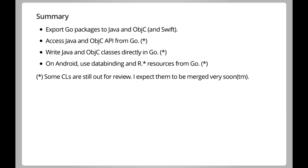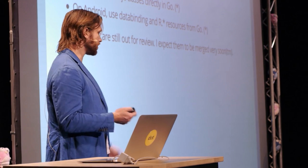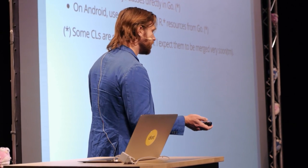In summary: you can export Go packages to Java and Objective-C, access the platform API directly by importing it just as you would with cgo, subclass platform classes directly in Go, and on Android the Go Bind Gradle plugin provides tight integration with your project dependencies, resource classes, and the data binding library. I hope you'll use Go Mobile for your own projects, or at least consider it and play around with it.